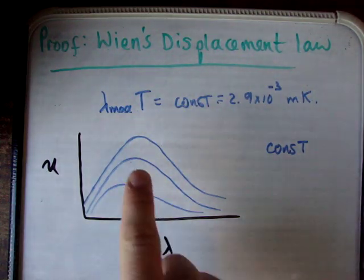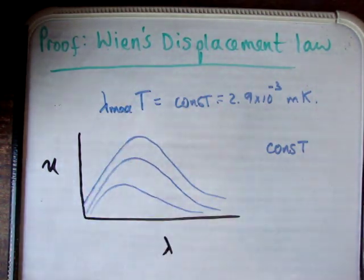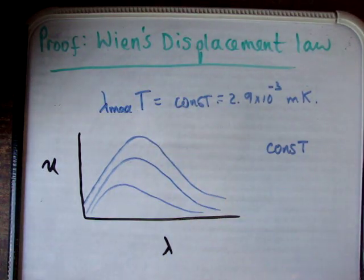And as you start increasing, you're going to get different curves like this at different temperatures. But the point is that as you change these variables, you're always going to be getting constant. And you're going to be displacing the curve by a certain amount. That's what's called a displacement law.